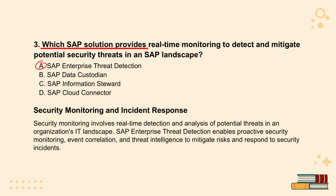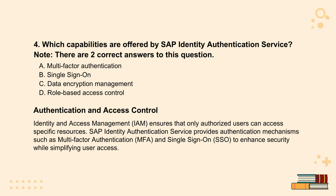Speaking of preventing unauthorized access attempts, question four dives into that world. It asks: which capabilities are offered by SAP Identity Authentication Service? This one has two correct answers. The right answers are A, multi-factor authentication, and B, single sign-on. Multi-factor authentication — MFA — is like double-checking someone's ID. It's not enough to just know your password; you need that extra proof, like a code from your phone or maybe a fingerprint scan. That adds another layer of security to weed out imposters.